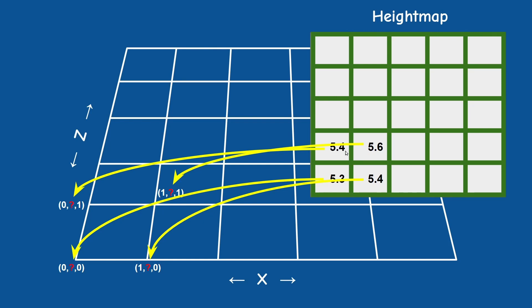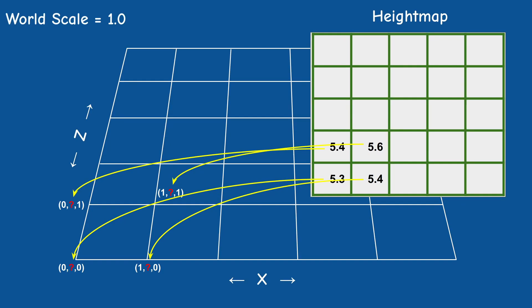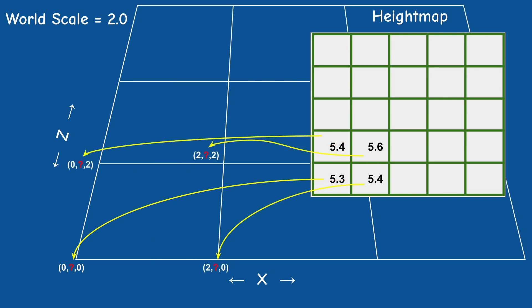By default the distance between neighboring vertices on both the X and Z is one unit, but we have this notion of a world scale which allows us to scale this one unit up or down and basically control the size of the terrain. This is something that we need to take into account in our calculations.